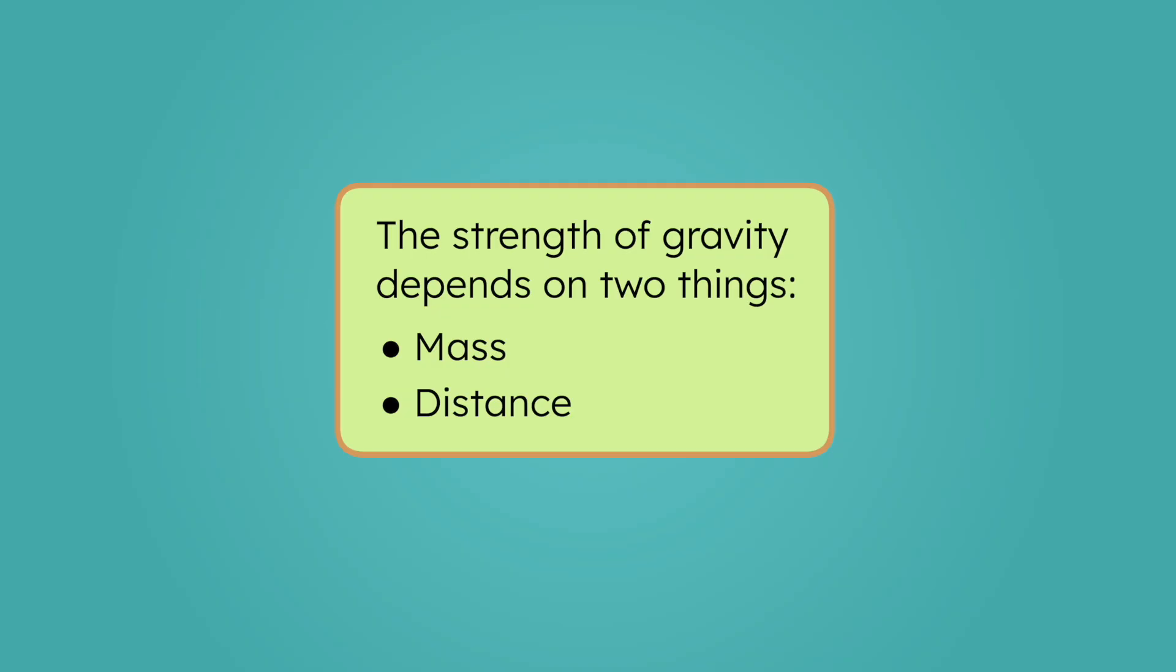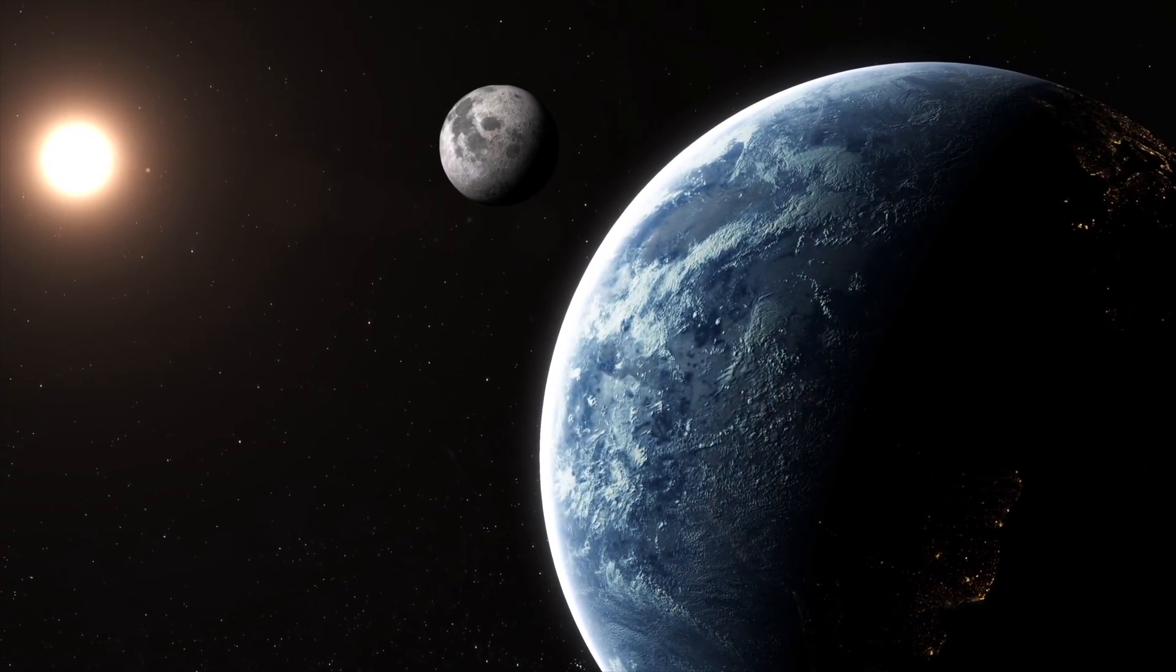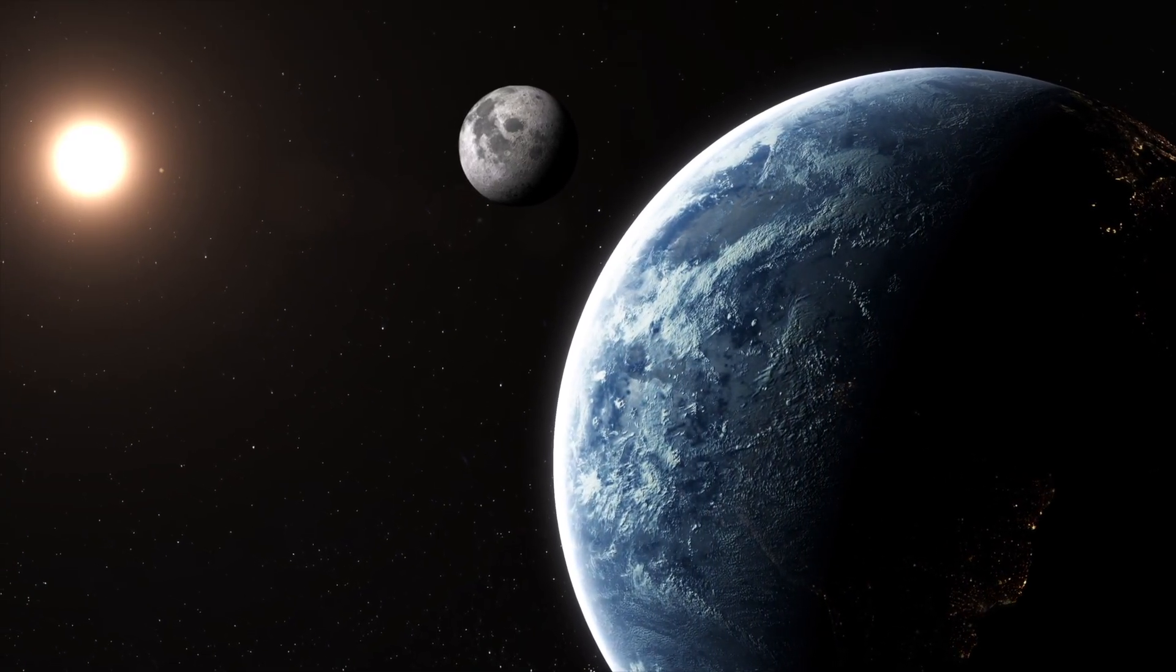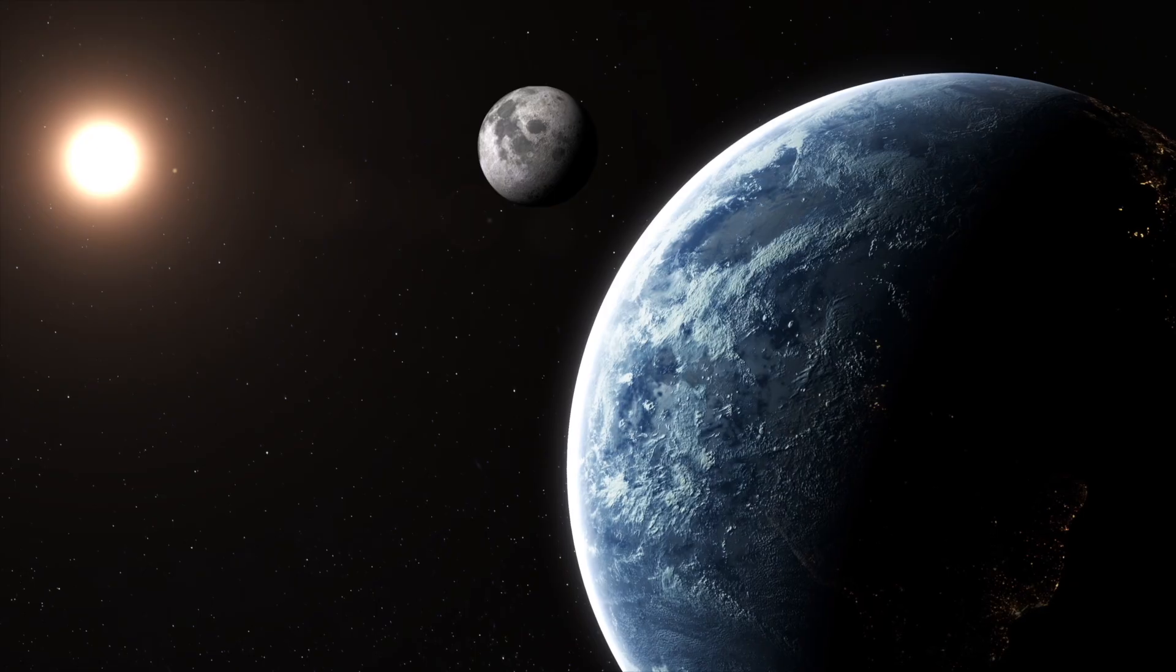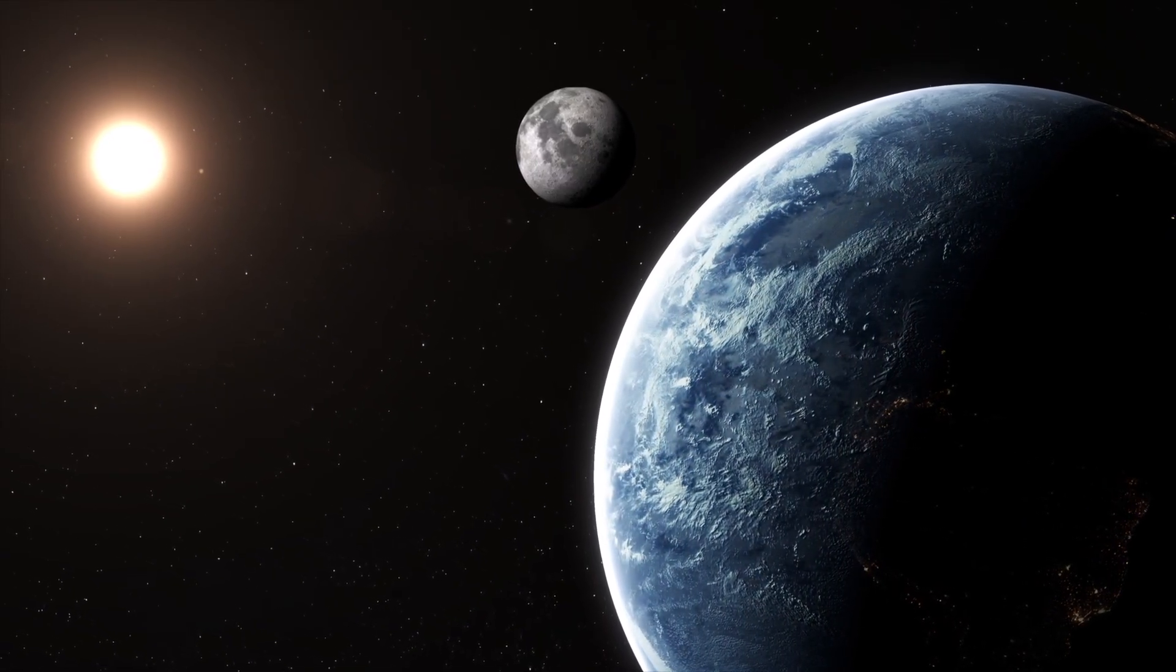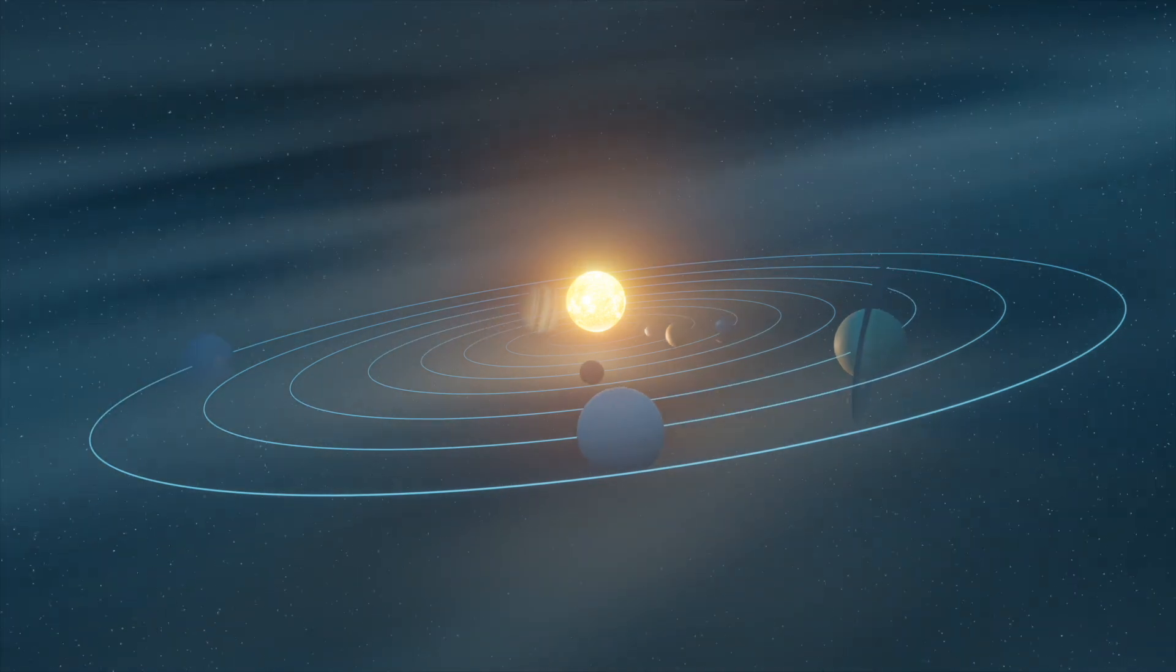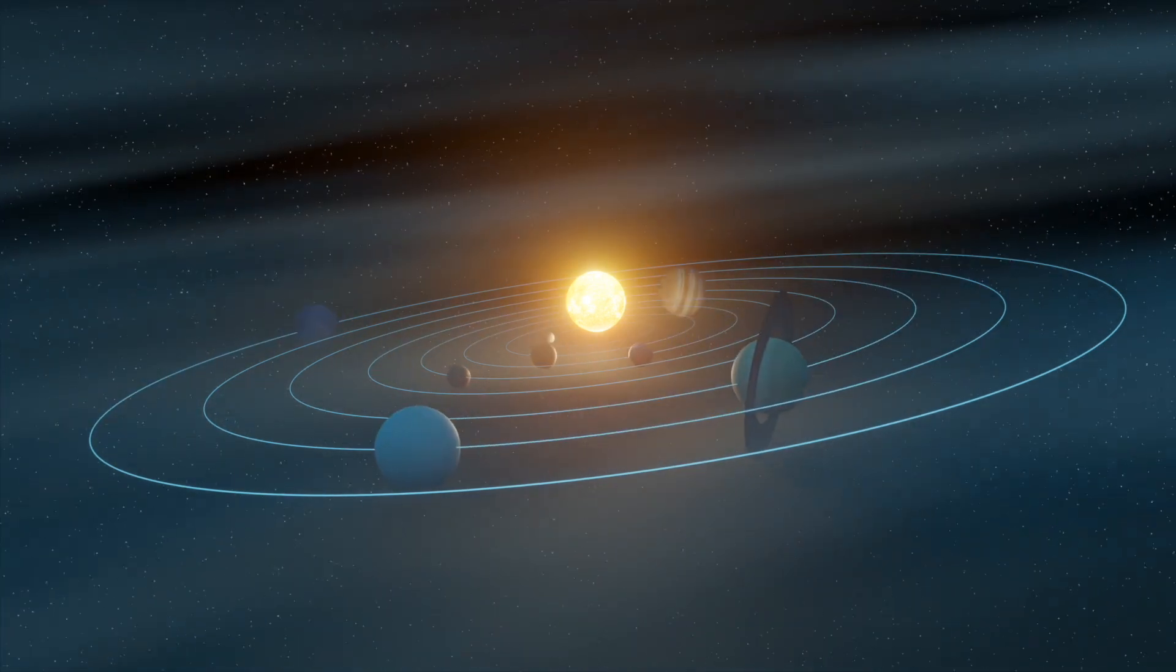The closer two objects are to each other, the stronger the gravity between them. Even though planets have less mass than the sun, they're much closer to their moons. At that distance, a planet's gravity has a stronger pull on its moon, keeping the moon in orbit around it. Gravity is what holds the solar system together. It's what keeps all of the objects in the solar system in their orbit.